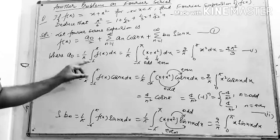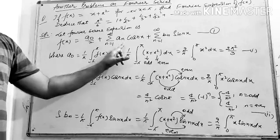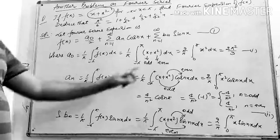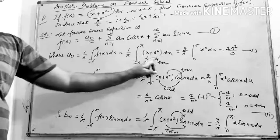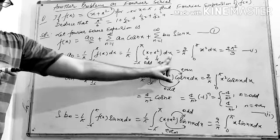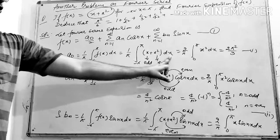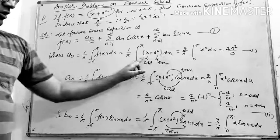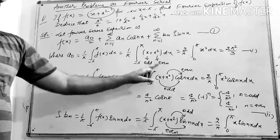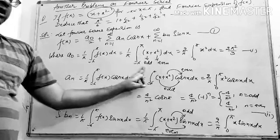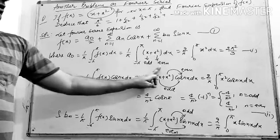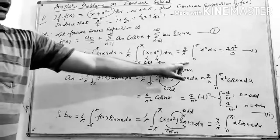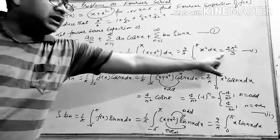a₀ = (1/π) ∫₋π^π f(x) dx = (1/π) ∫₋π^π (x + x²) dx. From the even and odd identification, x is an odd function and x² is an even function. The odd part becomes 0 and the even part gives twice the integral, so we get (2/π) ∫₀^π x² dx, which on solving gives a₀ = 2π²/3. Let this be result 1.